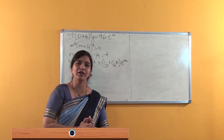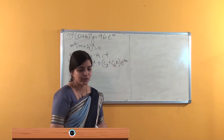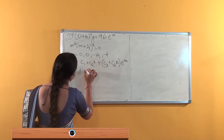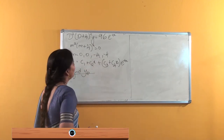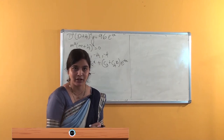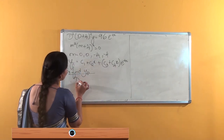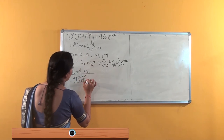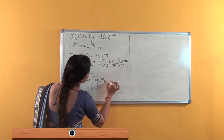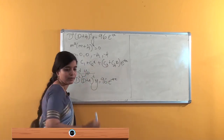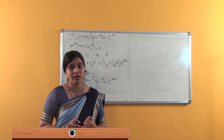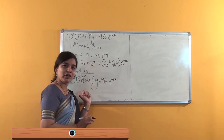The next work is finding the particular solution yp. The right-hand side is 96 e to the power minus 4x. Here, D squared (D plus 4) whole squared into y equals 96 e to the power minus 4x. What we can do is shift e to the power minus 4x to this side.